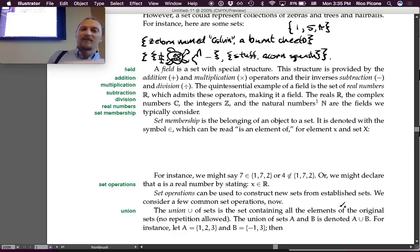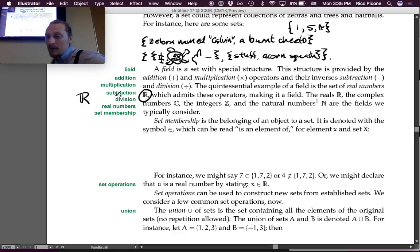A field is a set with special structure. It's very special. The structure is provided by the addition and multiplication operators and their inverses, subtraction and division. The quintessential example of a field is the set of real numbers, denoted R, which admits these operators, making it a field. The reals, the complex numbers C, the integers Z, and the natural numbers N are the fields we typically consider.